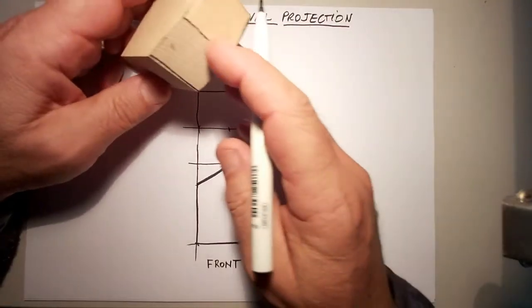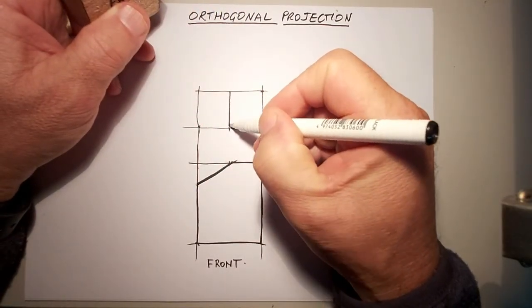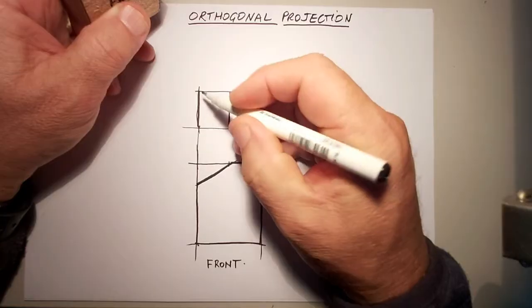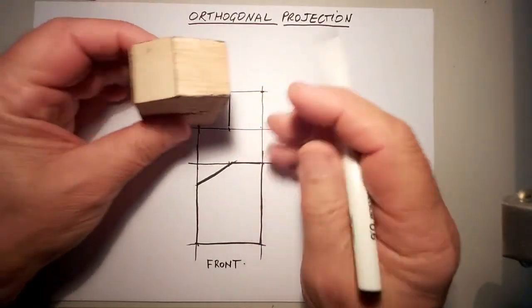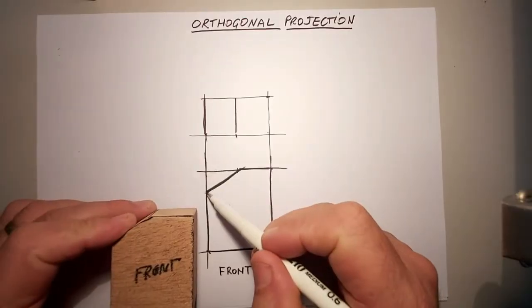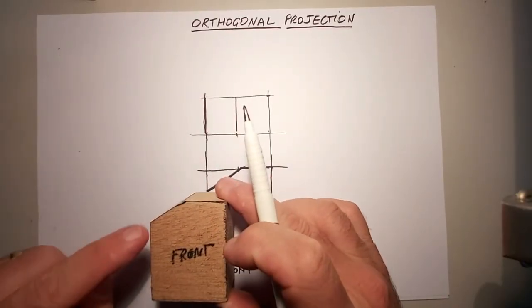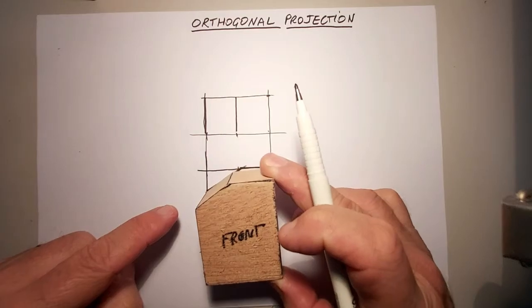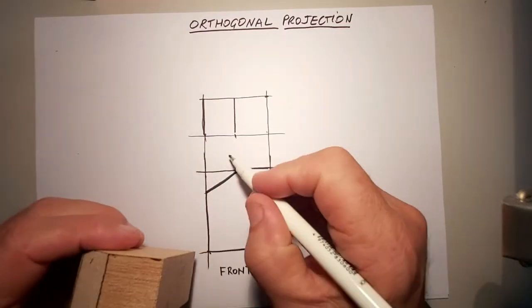That helps train your eye to know that this is going to be the same edge. So that edge there corresponds which is this edge here corresponds to that edge which we can just see the tip of it here flowing down that way. So that will be the top view.